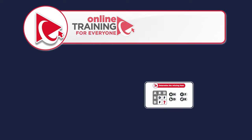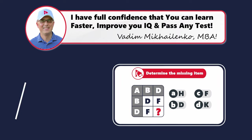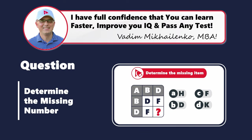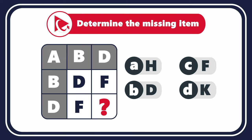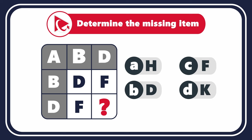Let's dive into the world of letters with this amazingly tricky question that evaluates your English alphabet knowledge and analytical skills. You're presented with a 3x3 matrix with letters inside. The first row has letters A, B, and D. The second row has letters B, D, and F.